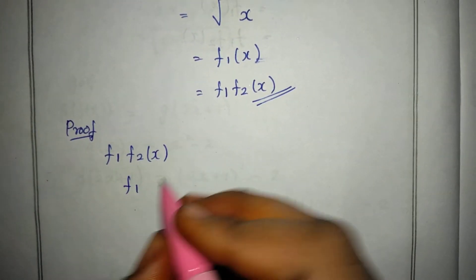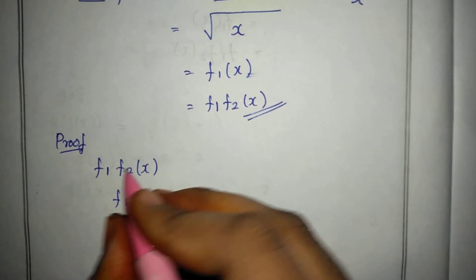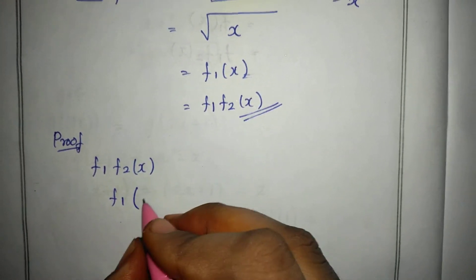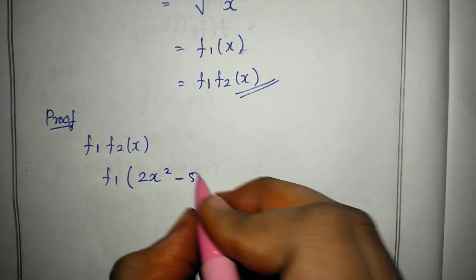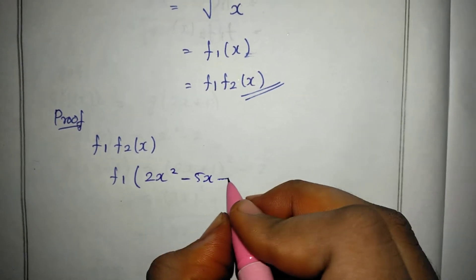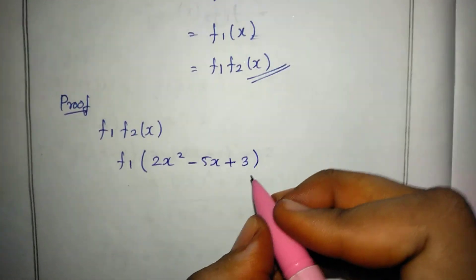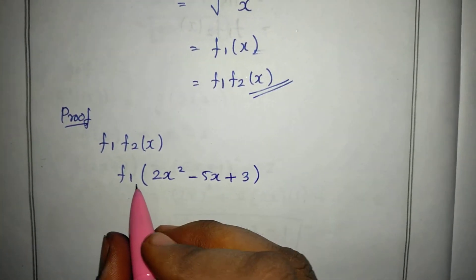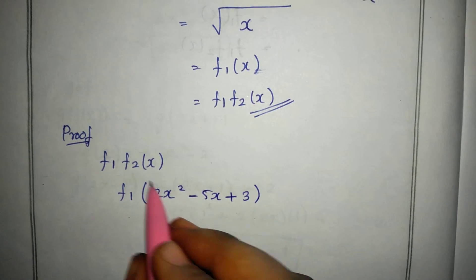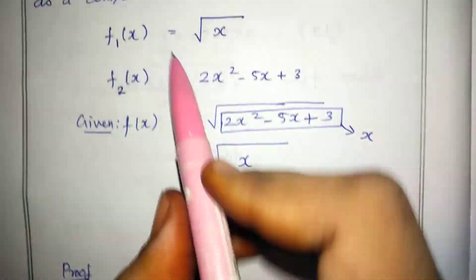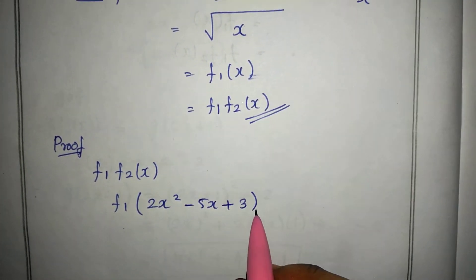f1 maps 2x squared minus 5x plus 3 to root of x. So f1 of x is equal to root of x.